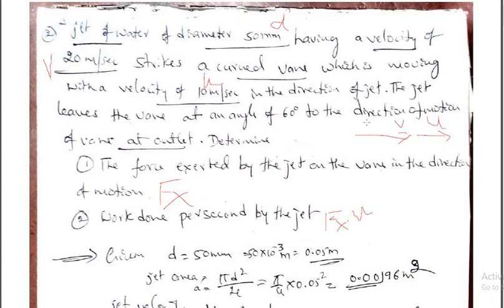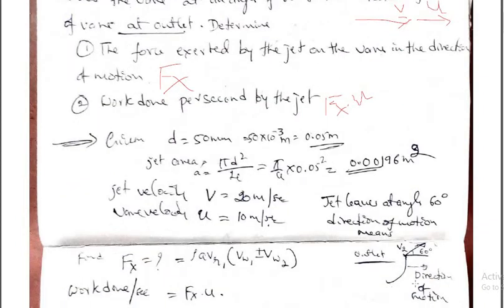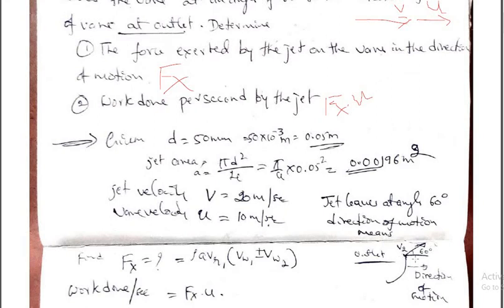The jet leaves the vane at an angle 60 degree to the direction of motion of the vane at outlet. It means V2 is making an angle 60 degree with respect to horizontal at outlet. To find out the force exerted, Fx is equal to the force in the direction of motion. Work done per second by the jet is Fx into U. Once the diameter of the jet is given, we can find out the area — pi D square by 4. Jet velocity is given, vane velocity is given, jet leaving direction V2 is given, so we can find out Fx.